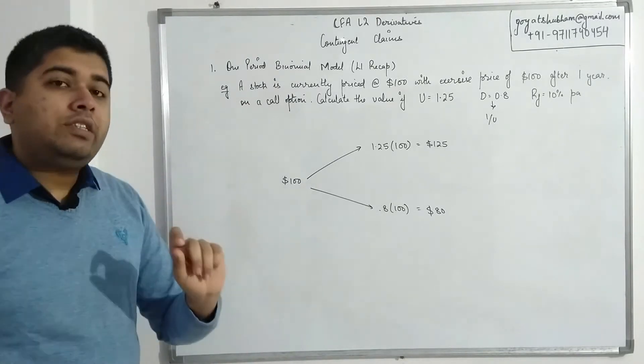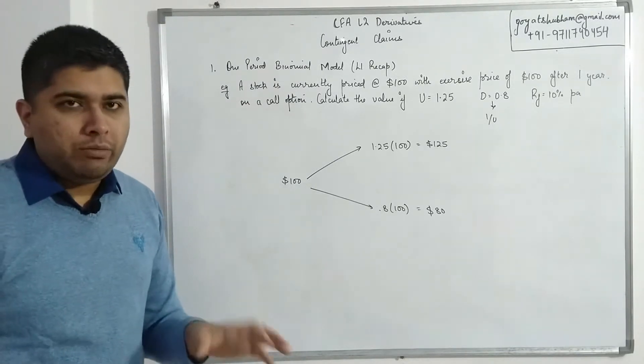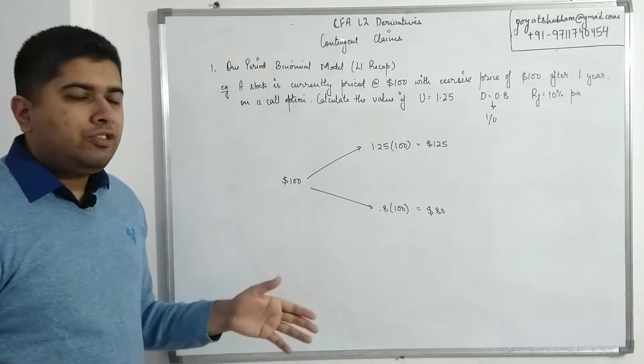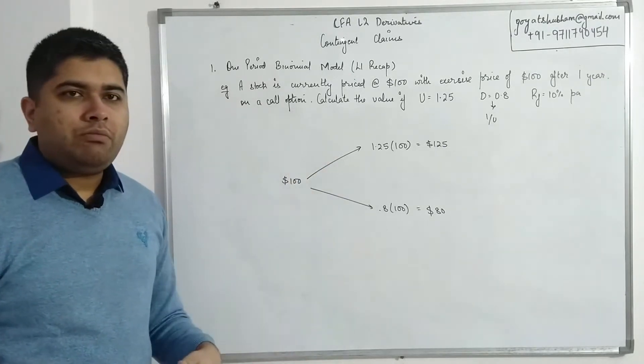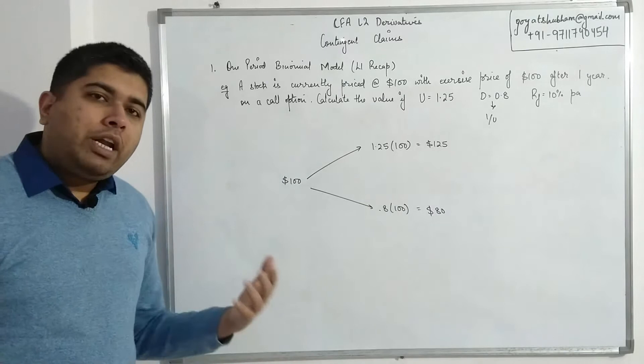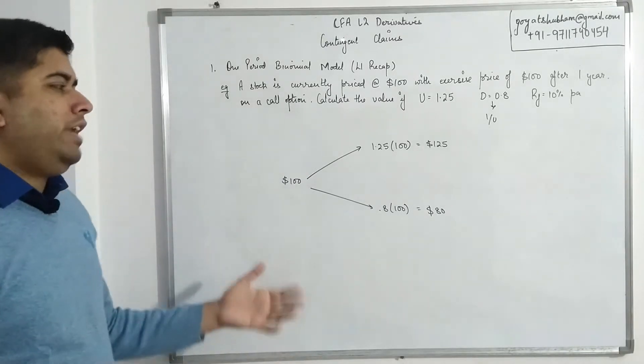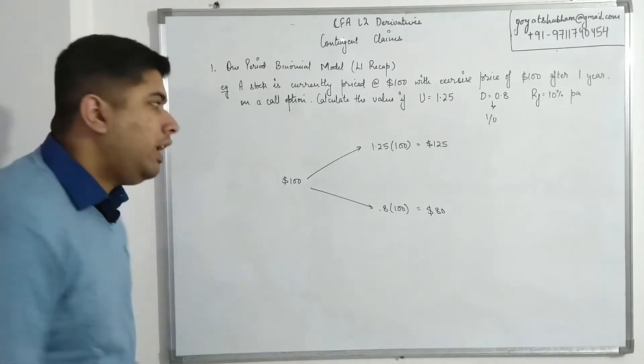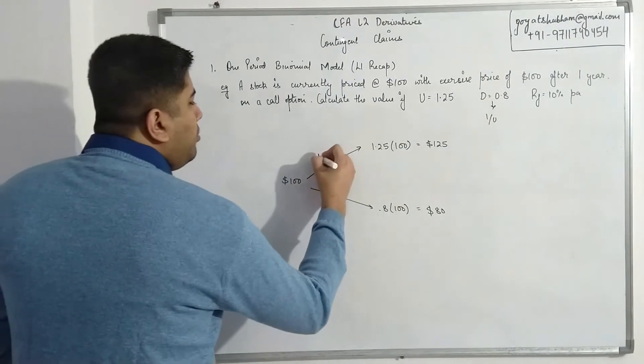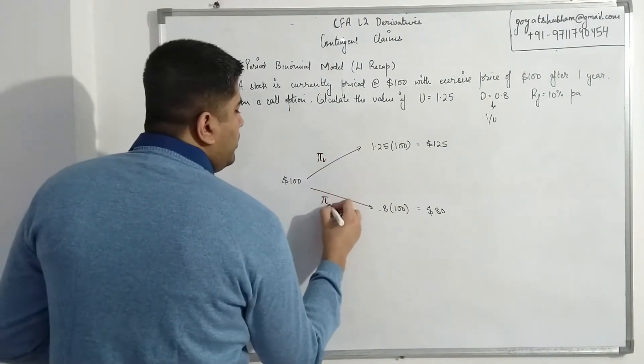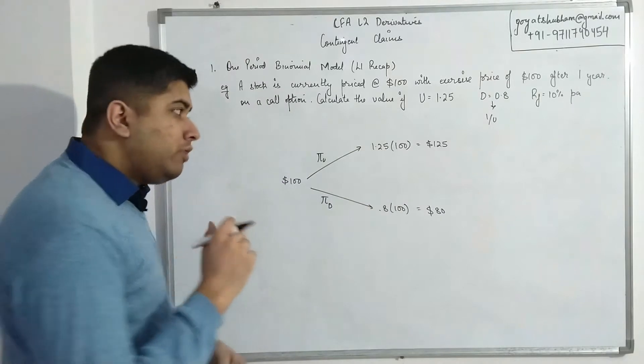Once we have this constructed, there is an element of probability as well. Because in case of fixed income we assume that the up and down move will be equally probable, but in case of options we do not have that luxury. In case of options we have to calculate probability of up move and probability of down.